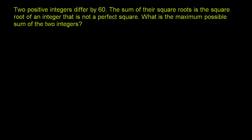Two positive integers differ by 60. The sum of their square roots is the square root of an integer that is not a perfect square. What is the maximum possible sum of the two integers? The second sentence is a little confusing, but let's take it step by step. So two positive integers differ by 60.